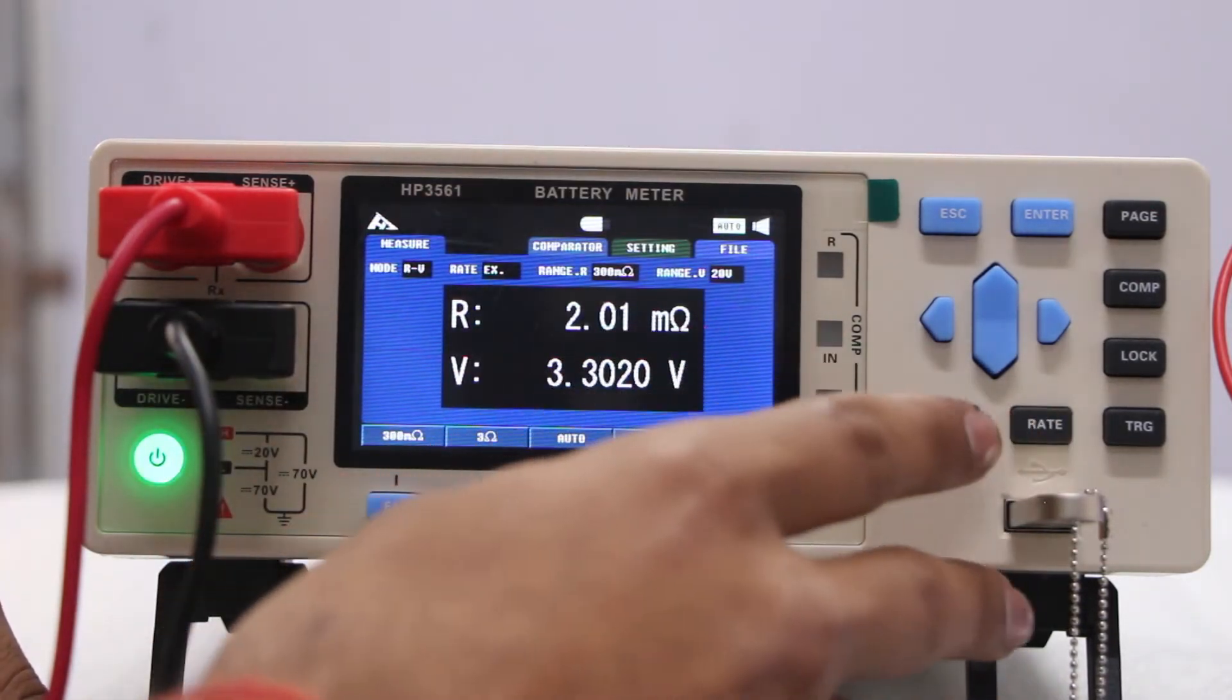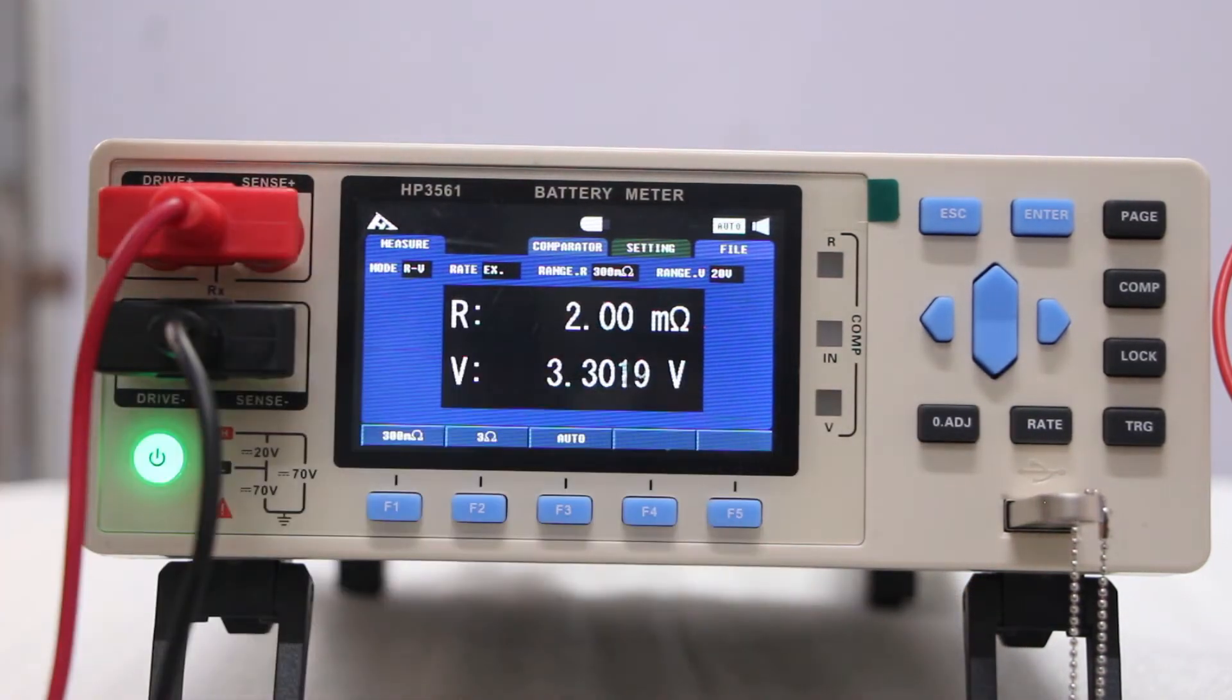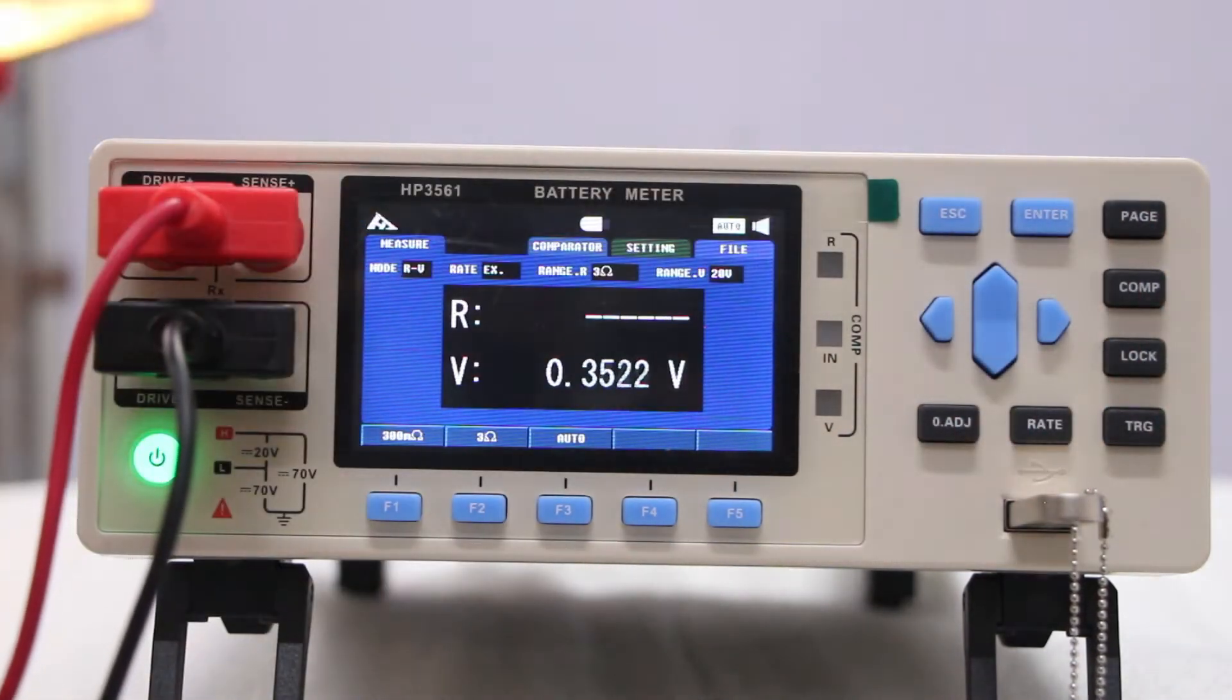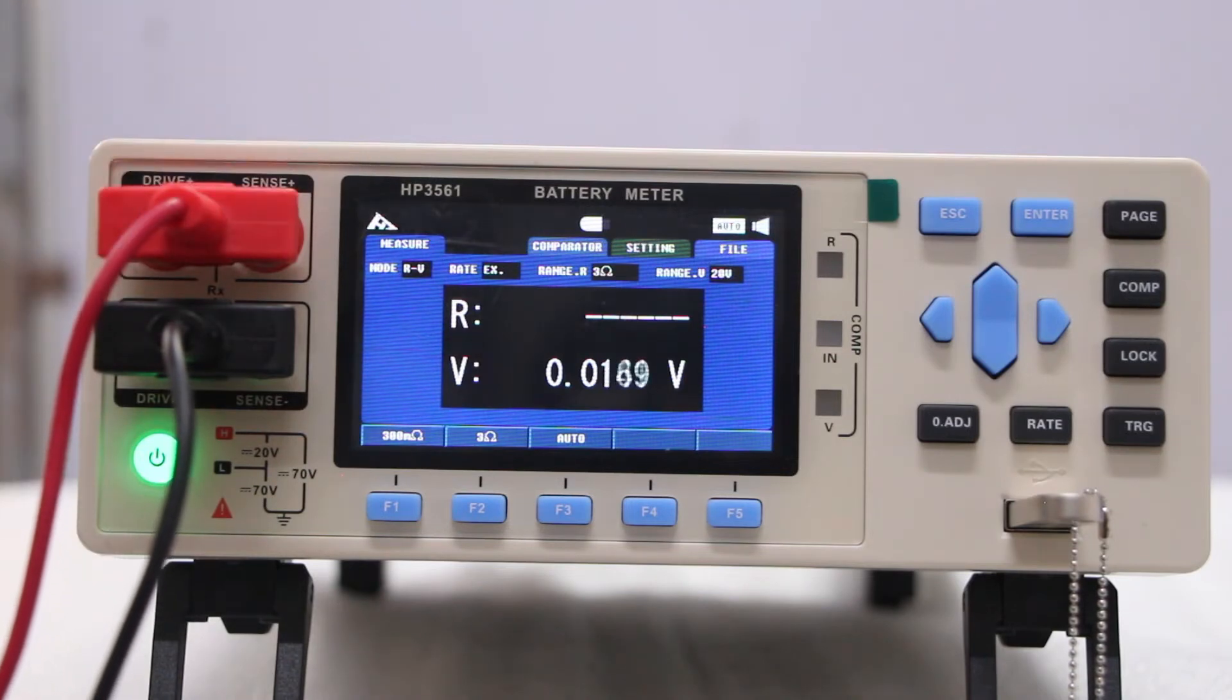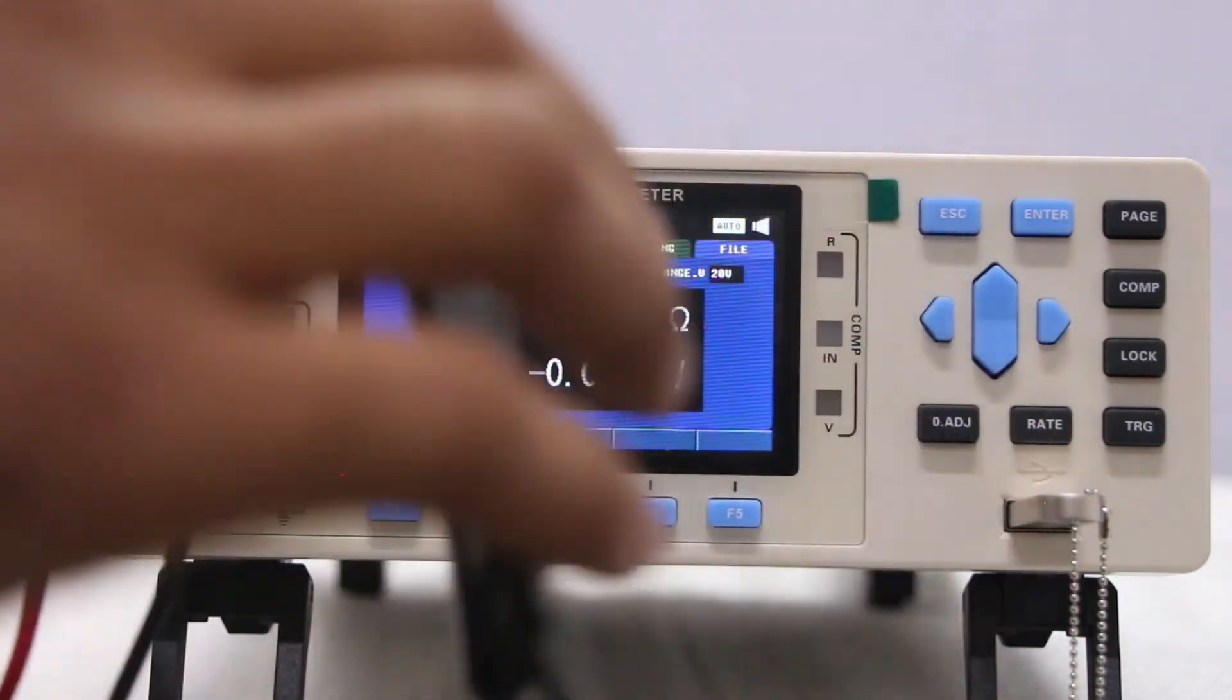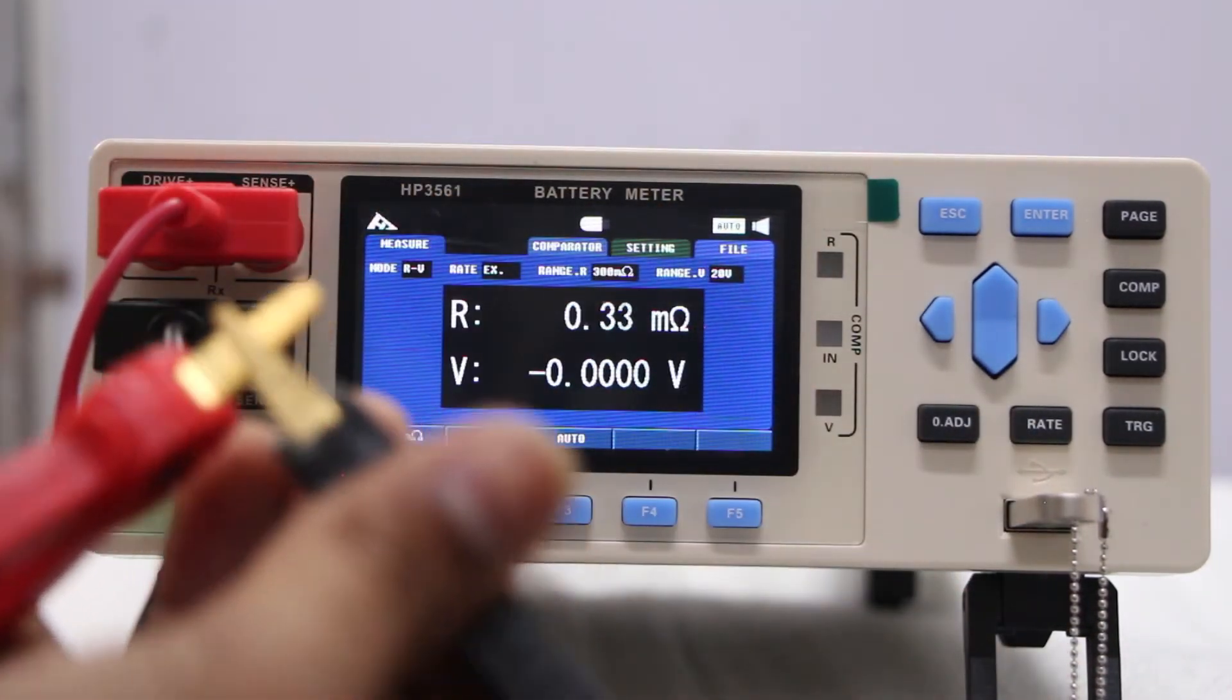As you can see that there is a zero adjustment. Zero adjustment purpose is like sometimes when you are not getting a proper IR means it might be possible that the machine may be not precise or not adjusted at zero. At that time you have to use zero adjustment.